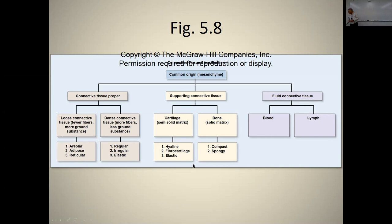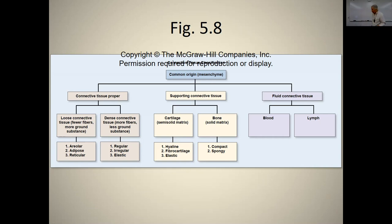Supporting connective tissue includes cartilage and bone. Cartilage has a semi-solid matrix and comes in three types: hyaline, fibrocartilage, and elastic. Bone has a solid matrix, with compact and spongy bone. Fluid connective tissue includes blood and lymph.